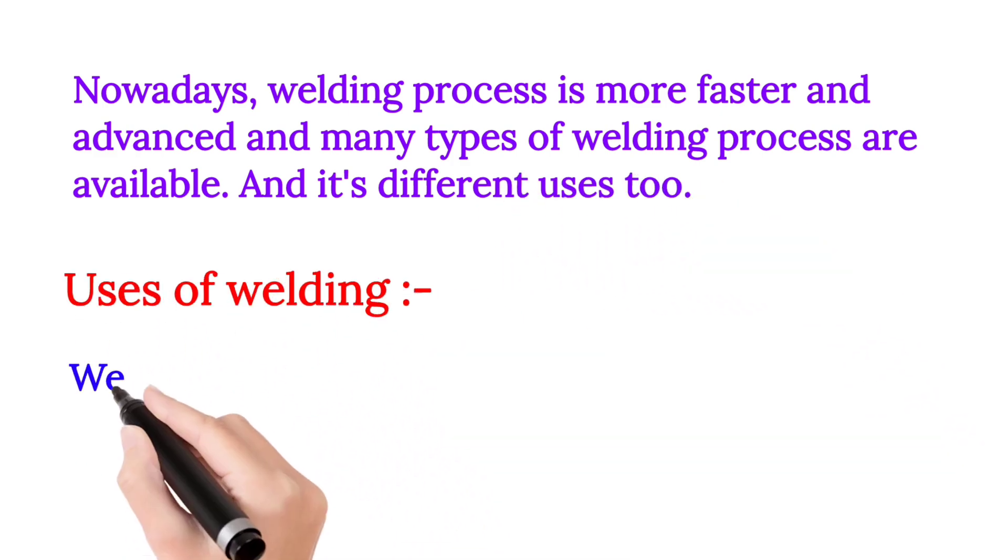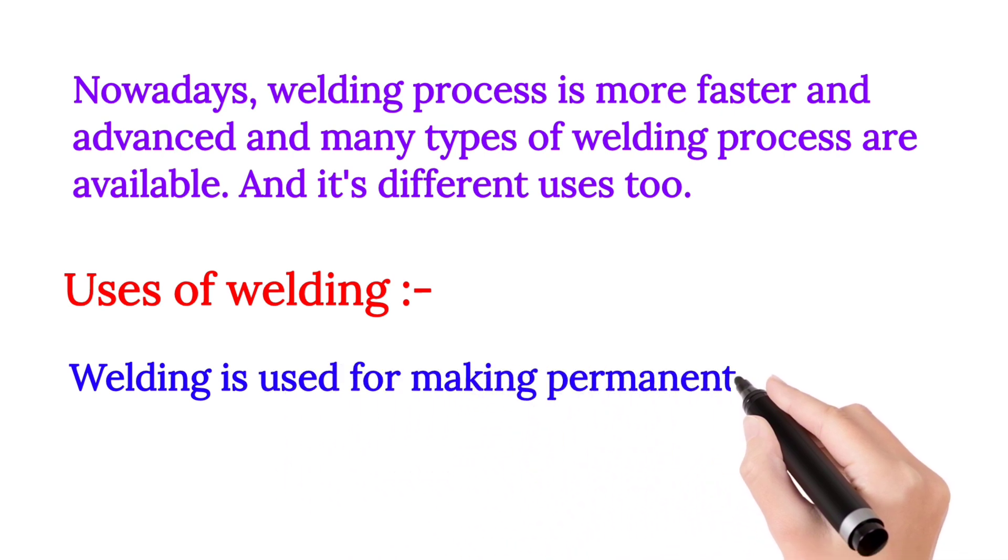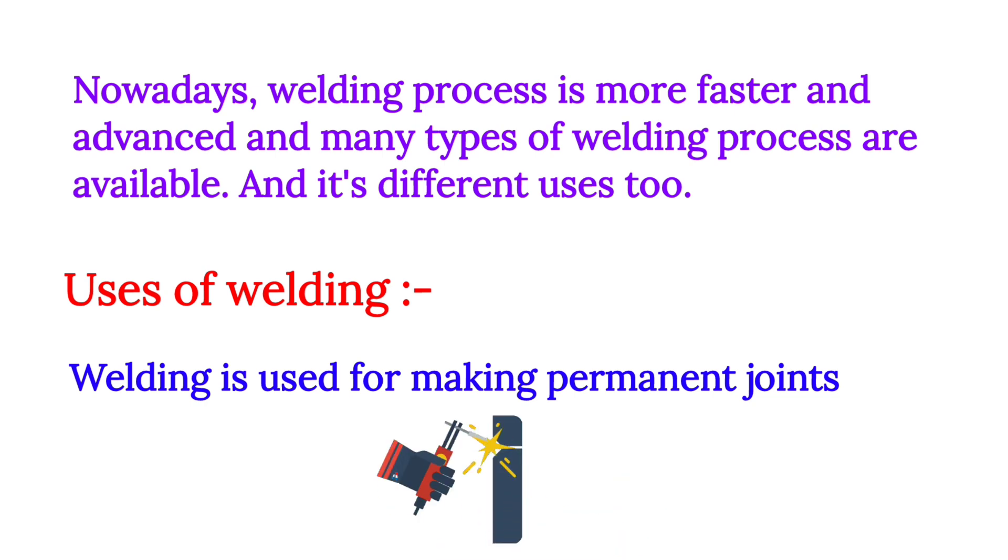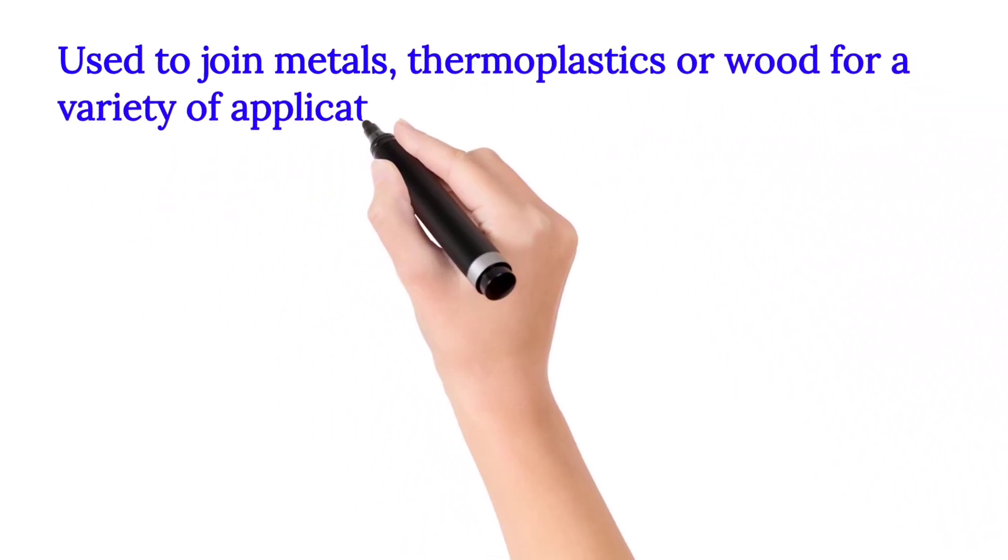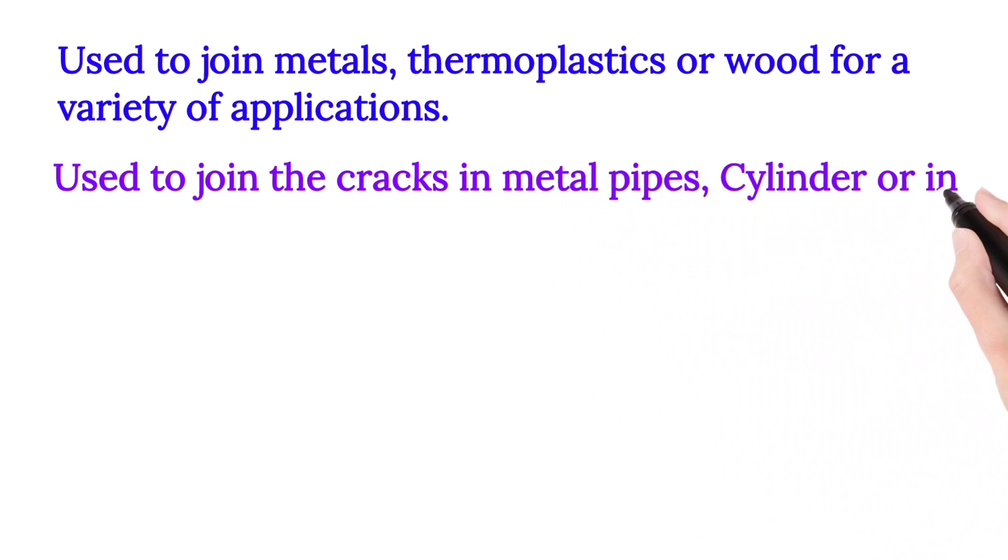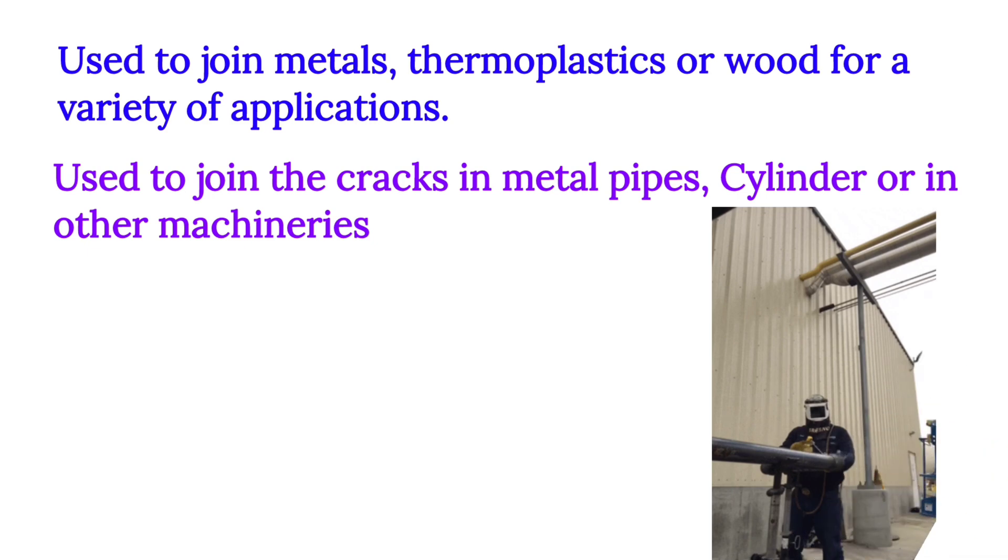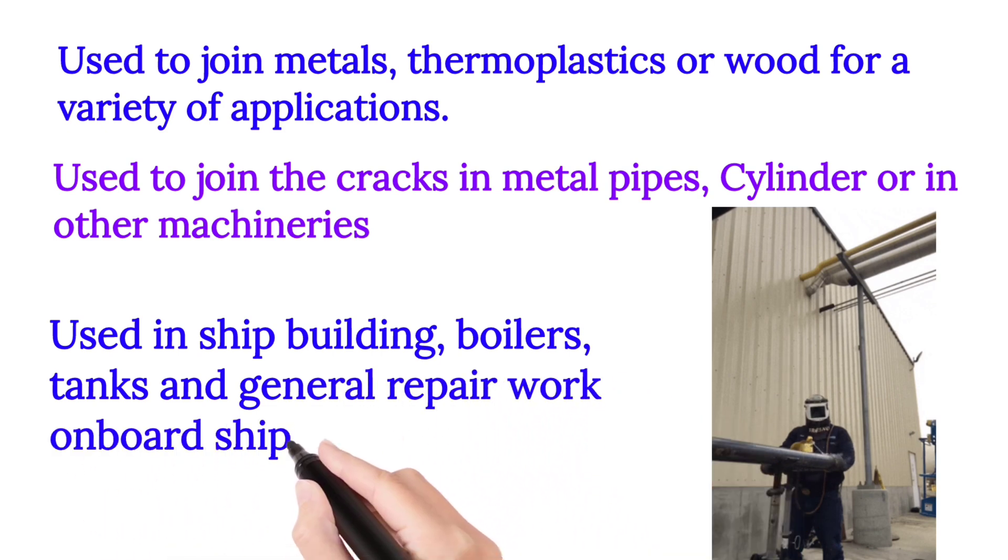Uses of welding: Welding is used for making permanent joints. Used to join metals, thermoplastics or wood for a variety of applications. Used to join the cracks in metal pipes, cylinders or in other machineries. Used in shipbuilding, boilers, tanks and general repair work on board ships.